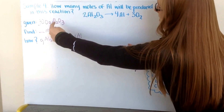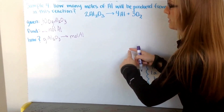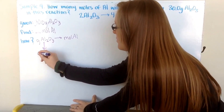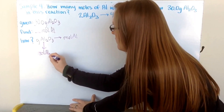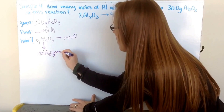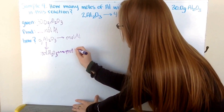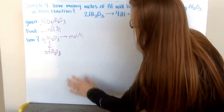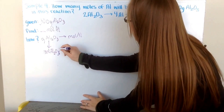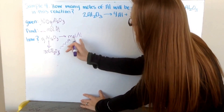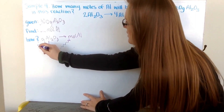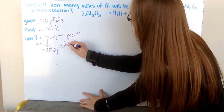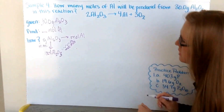Instead I need to go from grams of aluminum oxide down to moles, then cross my river to moles of aluminum. So I map it out: first go from grams down to moles of aluminum oxide using my molar mass (MM), then from moles of aluminum oxide across to moles of aluminum using my mole-to-mole ratio. Those are the two conversion factors I need to find.